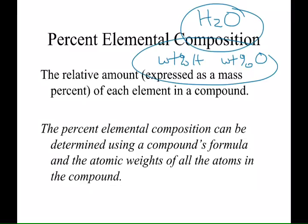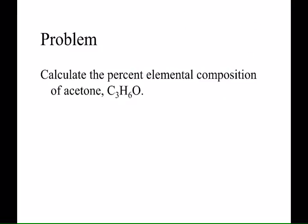So let's see what they look like. For instance, we could knock out a percent elemental composition for acetone which has three carbons, six hydrogens and one oxygen in one molecule of acetone. So we need to come up with what weight percent is hydrogen, what weight percent is carbon and what weight percent is oxygen.